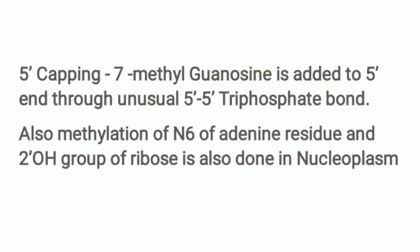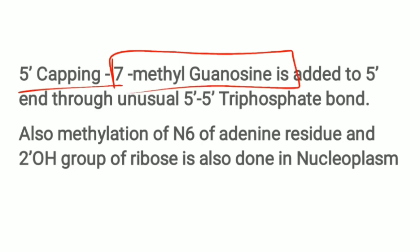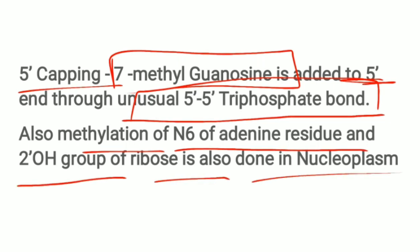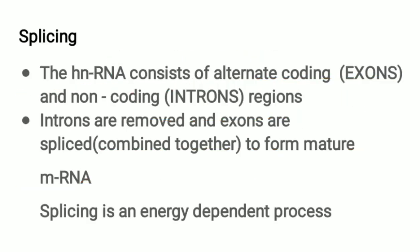Next is 5' capping, where 7-methylguanosine is added to the 5' end through the unusual 5' to 5' triphosphate bond. Additionally, methylation of N6 of adenine residues and the 2'-OH group of ribose is also performed in the nucleoplasm.